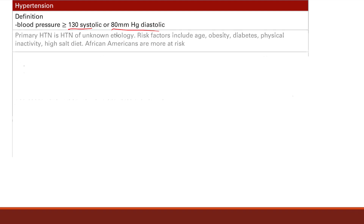Age you can't really modify, but being obese you can modify, having diabetes you can modify, you can be more physically active, you can eat less salt. Also, being African American is a risk factor for primary hypertension.